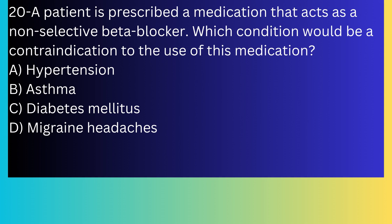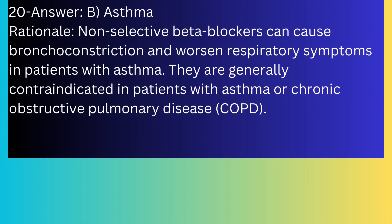Question number twenty: A patient is prescribed a medication that acts as a non-selective beta-blocker. Which condition would be a contraindication to the use of this medication? A) Hypertension, B) Asthma, C) Diabetes mellitus, D) Migraine headache. The answer is B, asthma. Non-selective beta-blockers can cause bronchoconstriction and worsening respiratory symptoms in patients with asthma. They are generally contraindicated in patients with asthma or COPD.